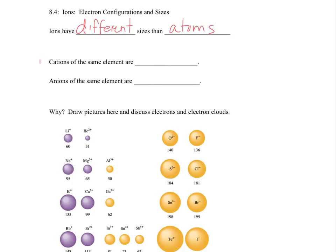So a cation, which is a positive ion - are you positive you lost the cat? - the ion is smaller than the actual atom that it came from because it lost electrons. Anions, which are negative from the same element, are larger.